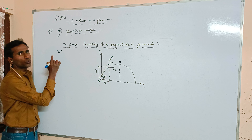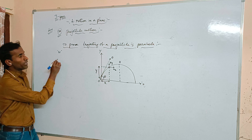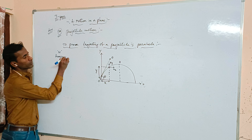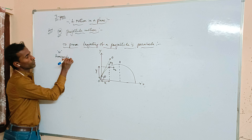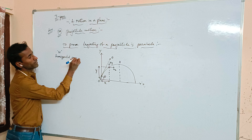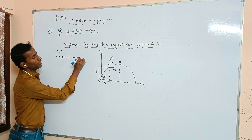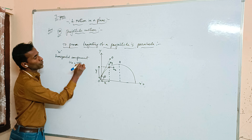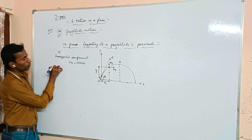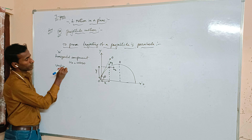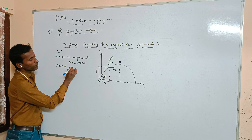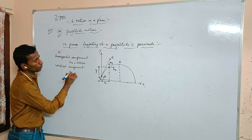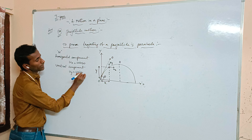The initial velocity u is resolved into two rectangular components. The horizontal component is ux = u cos theta and the vertical component is uy = u sin theta.